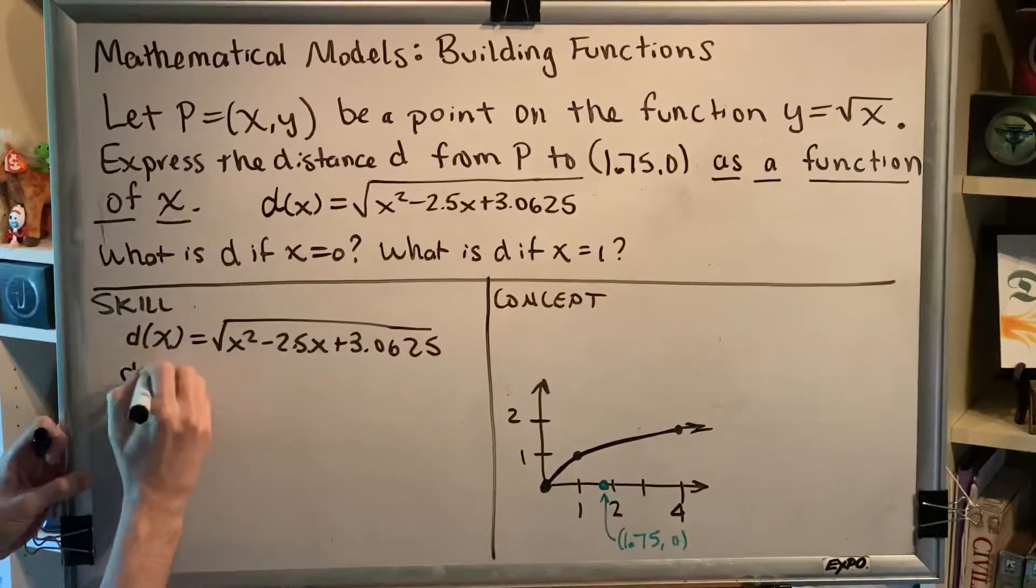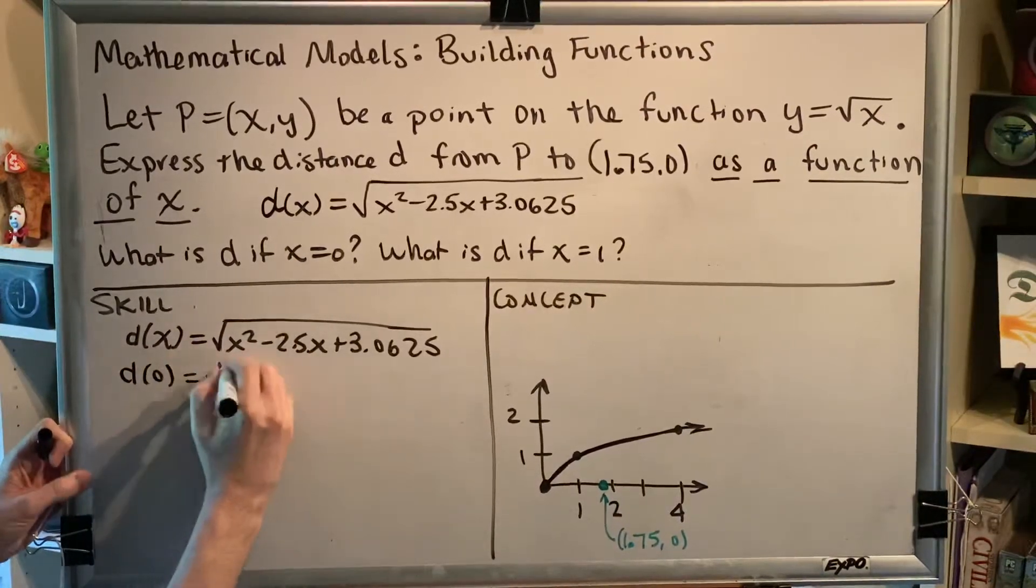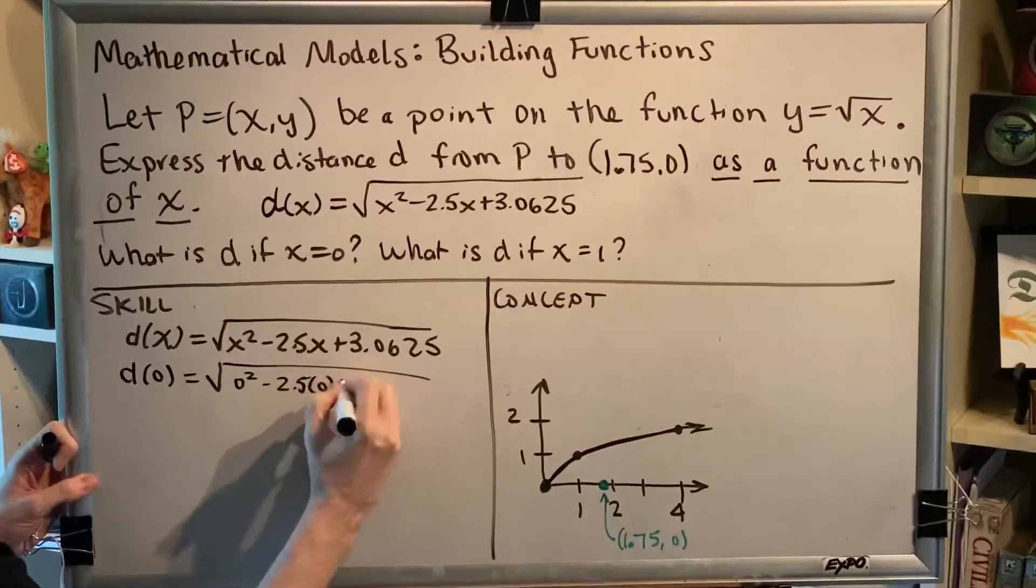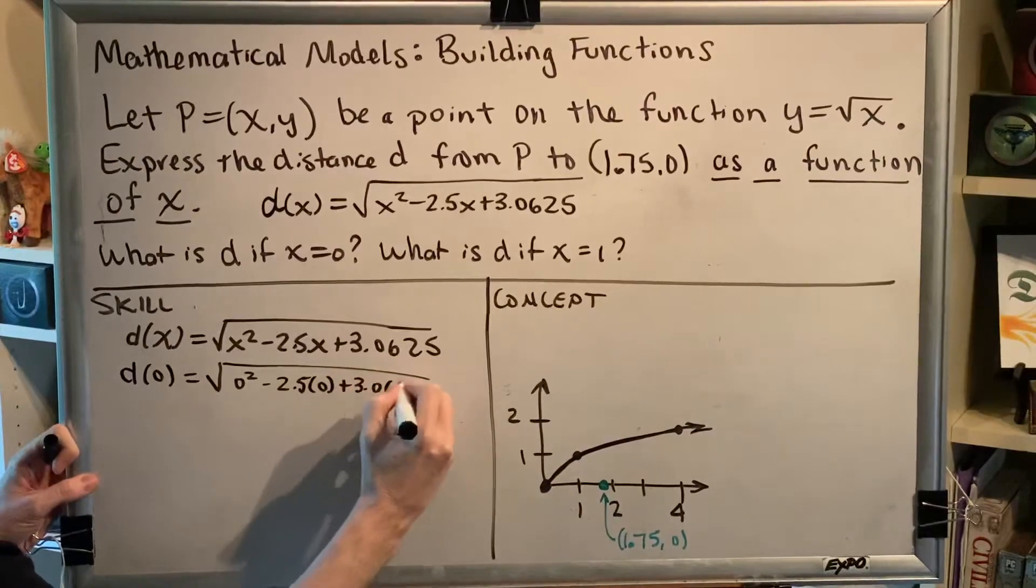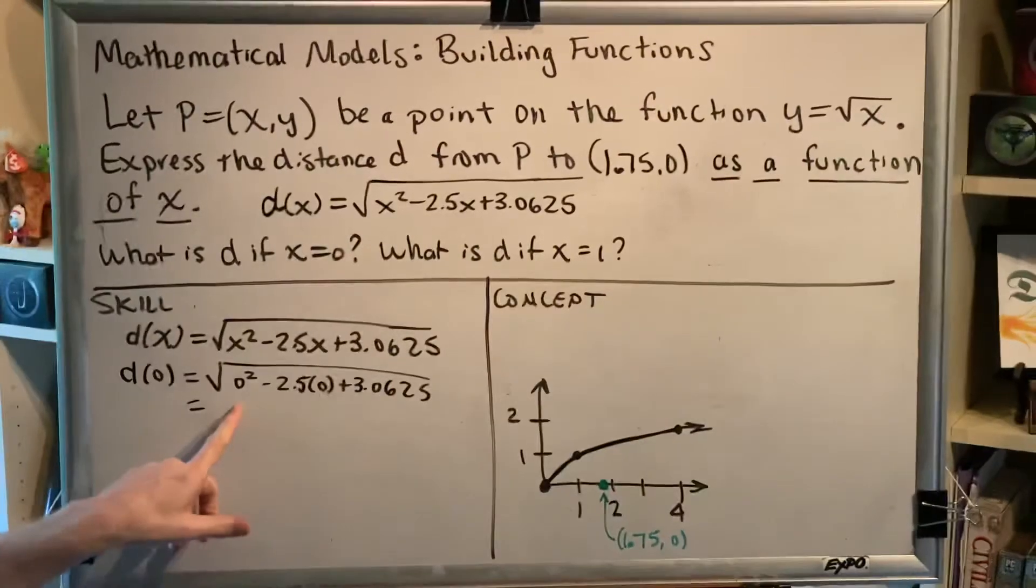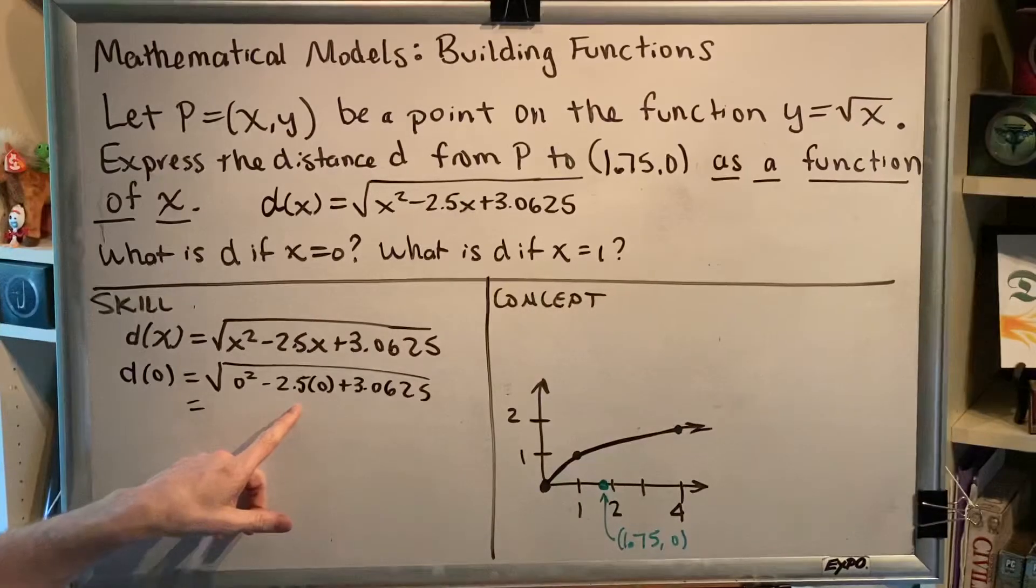So we get d(0) is equal to the square root of 0 squared minus 2.5 times 0 plus 3.0625. Well, if you think about it, 0 squared is 0. 2.5 times 0 is 0.